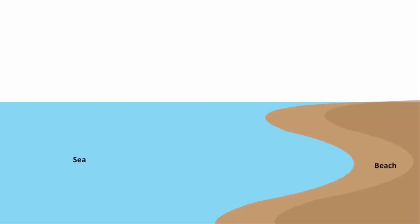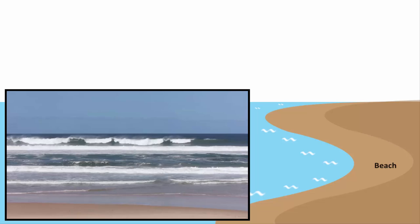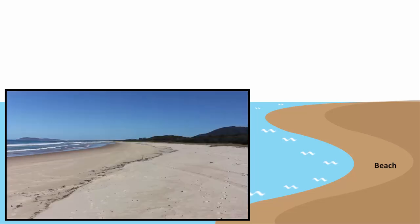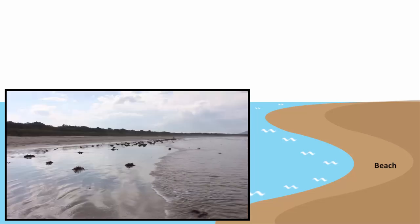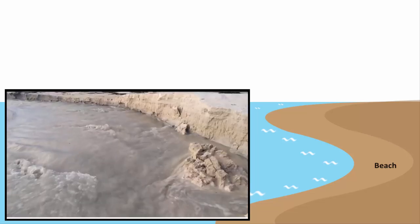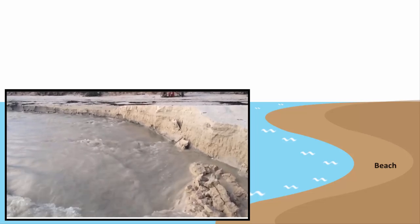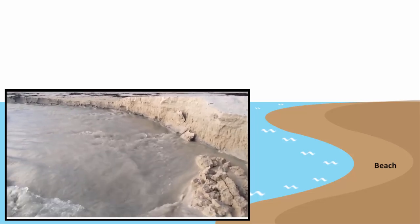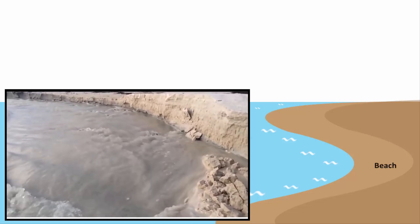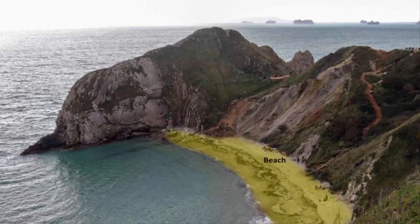Now let's look at a beach next to a sea or an ocean. Waves of the ocean or sea continuously hit the shore. Every time the waves hit the shoreline, they erode the existing sediment and roll them over and over again. If there are rocks, the continuous hitting of waves wears the rock down into fine sediment.